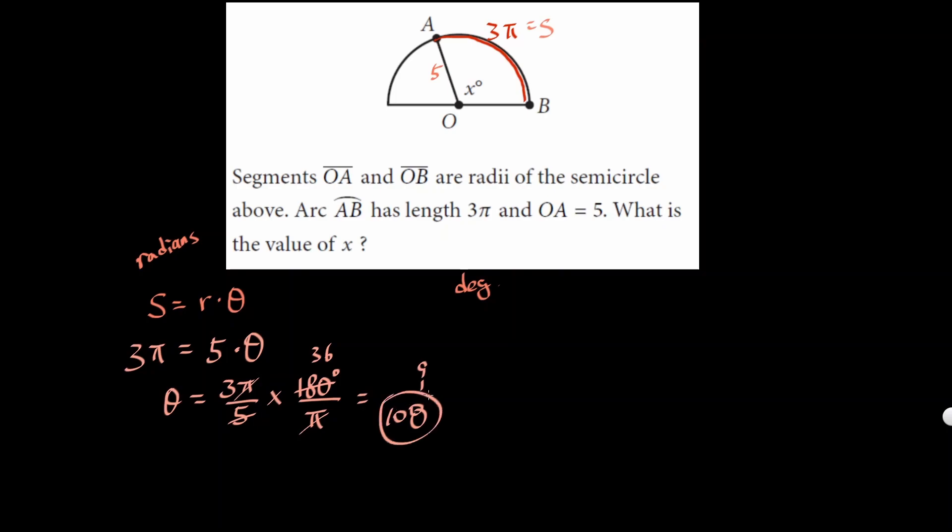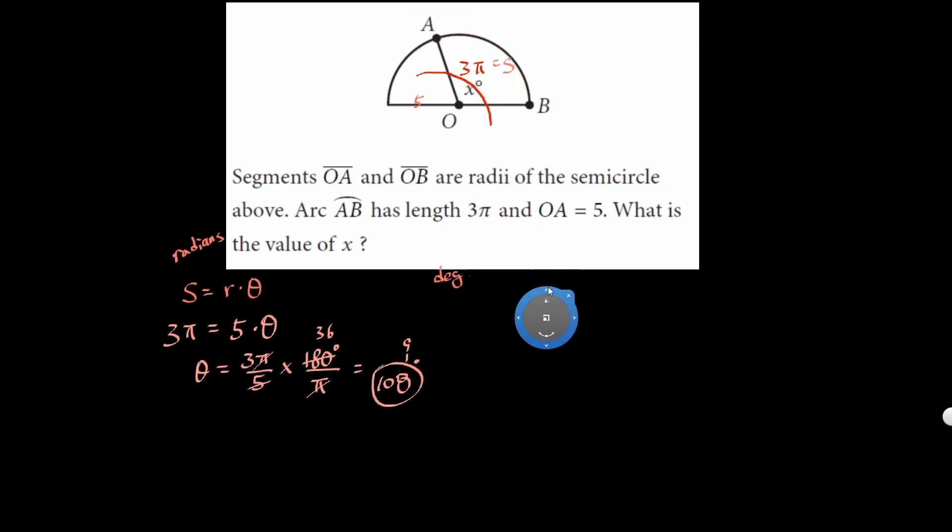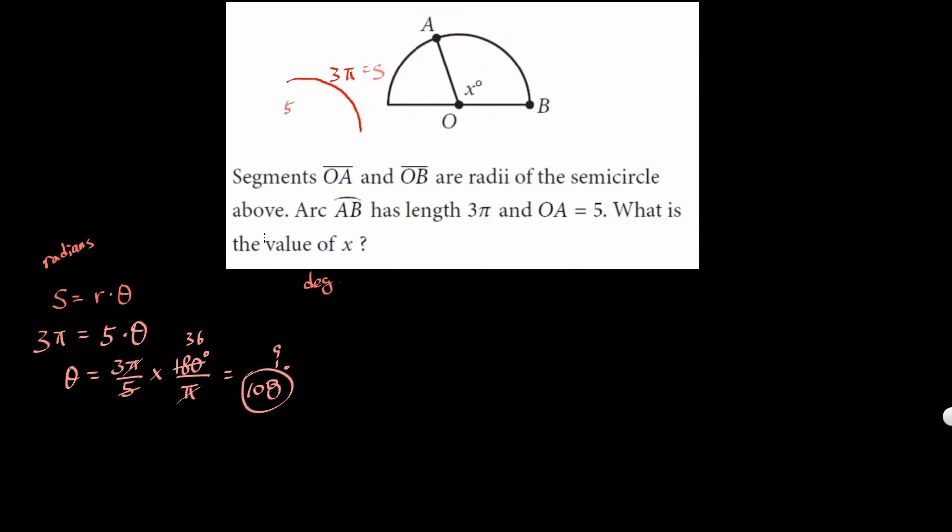So 3 times 36 is 108. Okay, so it's 108. However, if you don't like the radians, you could just focus on the degree form.